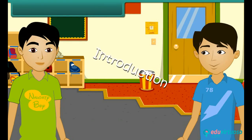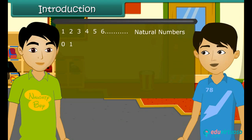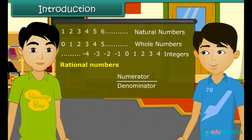What are you doing Amit? Hey Rahul, come. You know today our maths teacher taught us a new topic — rational numbers. I know about natural numbers, whole numbers and integers, but what are the rational numbers? These numbers are in the form numerator by denominator, where numerator is either 0 or a positive integer and the denominator a positive integer. I did not understand. Come, I will explain you.